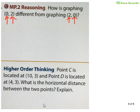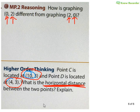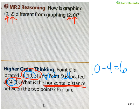The last question says point C is located at (10, 3) and D is located at (4, 3). They want to know the horizontal distance between the two points. Horizontal is on the x-axis, so I look at just my x's. I have 10 and 4 — what's the distance between? 10 minus 4 equals 6, so there's 6 units between the two points. I could have asked what's the vertical distance — then I would use 3 and 3. 3 minus 3 is 0, so there is no distance difference between the two. You're going to have to make sure you pay attention to questions like that.